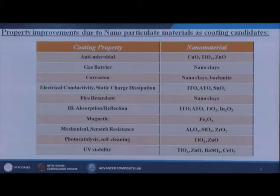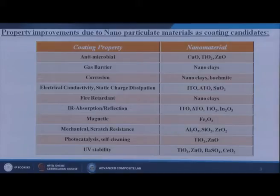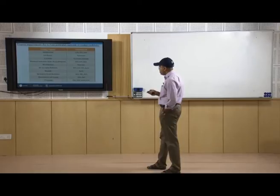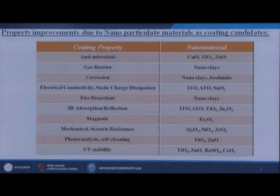To increase gas barrier properties we can use several types of nano clays — clays in nano form. To improve corrosion properties we can use nano clays or boehmite. For electrical conductivity and static charge dissipation, we can use indium tin oxide (ITO), antimony doped tin oxide (ATO), or tin oxide. For fire retardant applications, nano clay nanoparticles can be used.